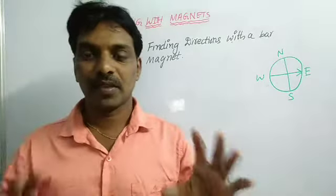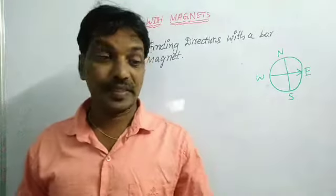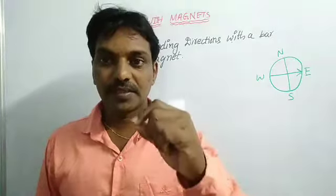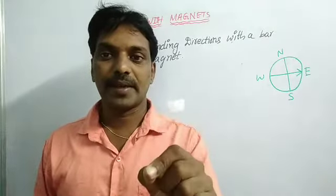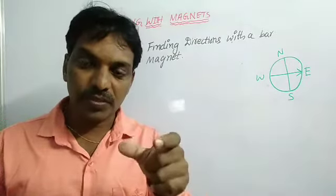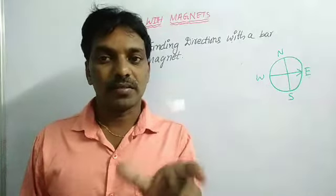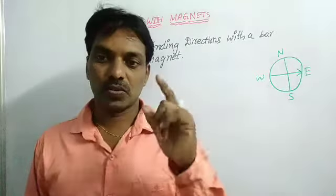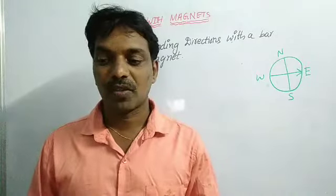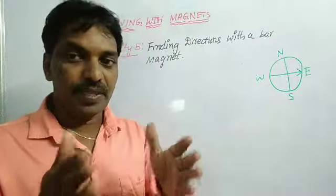Why are we discussing this? Generally we can find directions without using a magnetic compass. But whether it is correct or wrong, that we can prove with magnets. By using a bar magnet we will find the direction. There is an instrument called the magnetic compass — in that also a magnet is there, and it also shows directions. The magnetic compass contains a magnet, but here we are using a magnet directly to find out the direction.